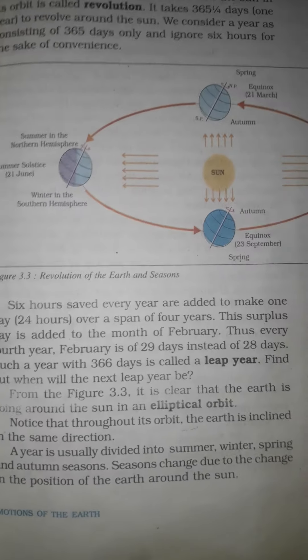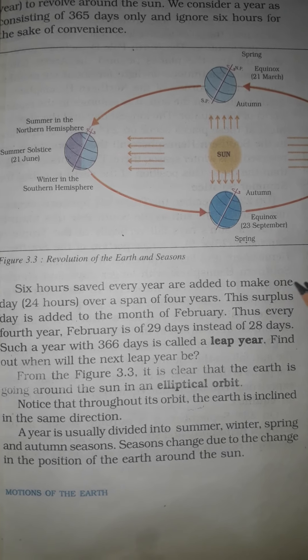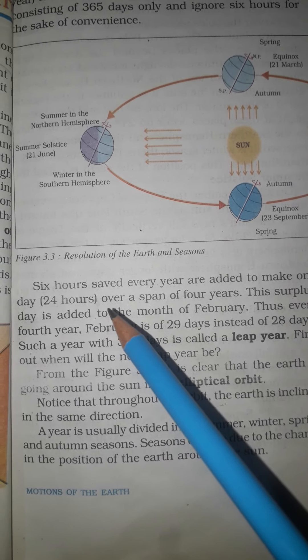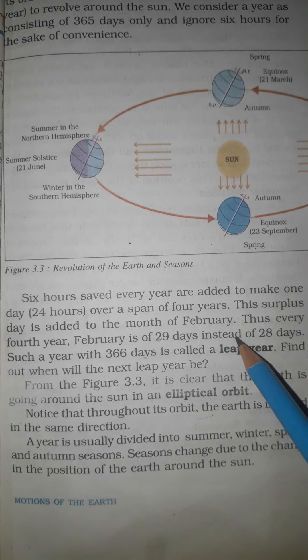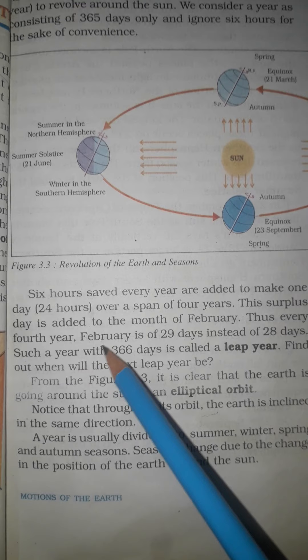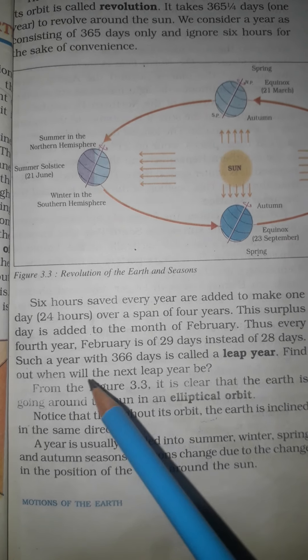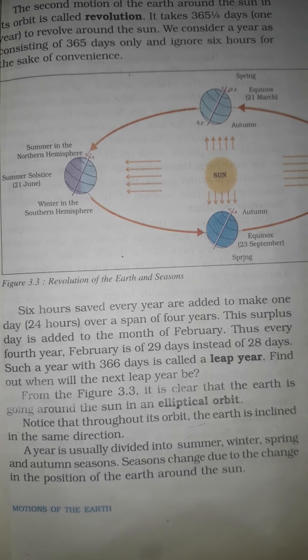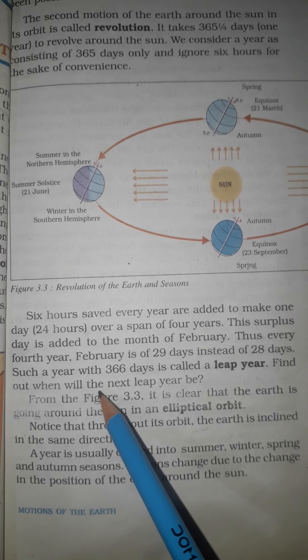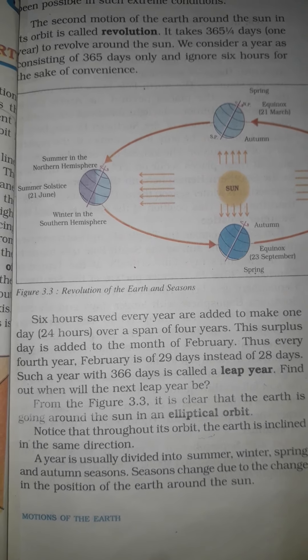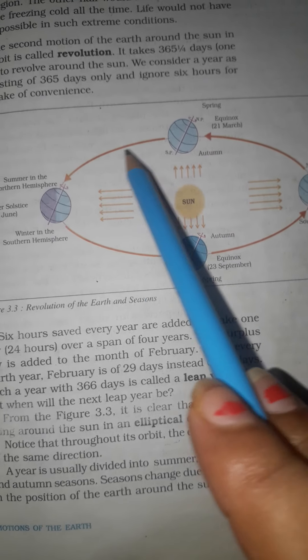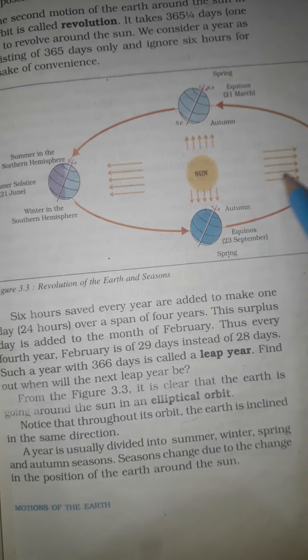The 6 hours saved every year are added to make 1 day of 24 hours over a span of 4 years. This surplus day is added to the month of February, so every 4th year February has 29 days instead of 28. Such a year with 366 days is called a leap year. Find out when the next leap year will be. It is clear that the earth goes around the sun in an elliptical orbit.